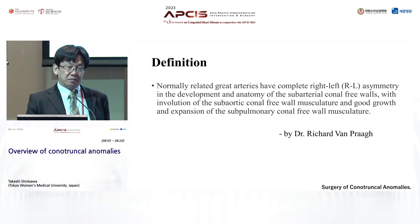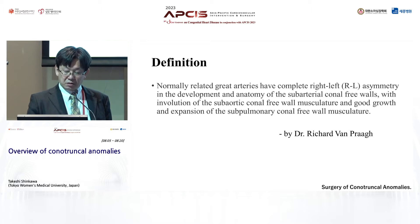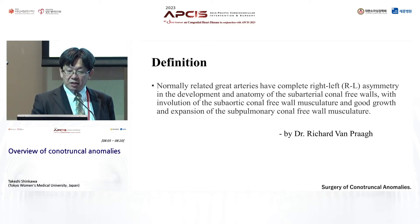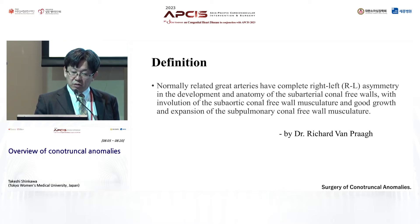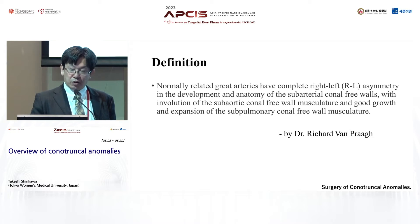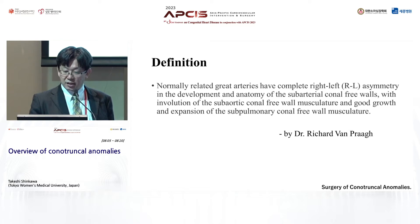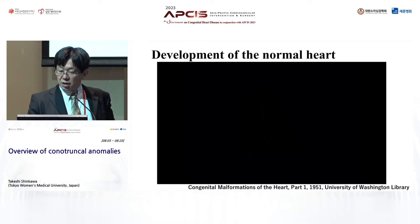So what is a normal VA connection? You cannot determine an abnormal VA connection without knowing what a normal one is. Going back to the same book, Dr. Richard Van Praagh describes that normally related great arteries have complete right-left asymmetry in the development and anatomy of the sub-arterial conus free walls, with involution of the sub-aortic conus free wall musculature and growth and expansion of the sub-pulmonary conus free wall musculature. It's very difficult to understand by sentences, so let's see the heart development process in this short video.